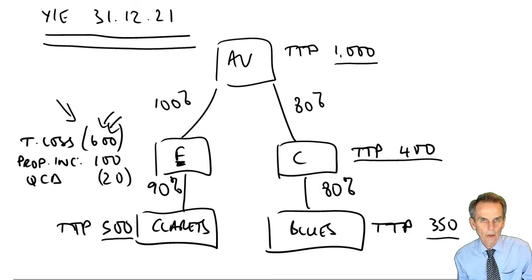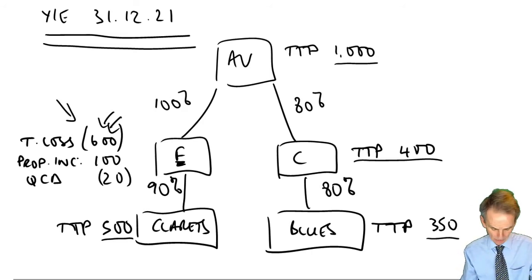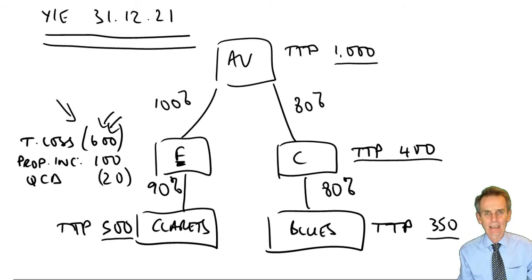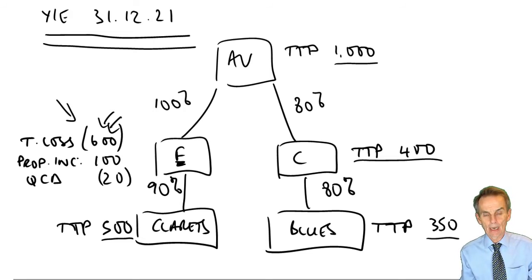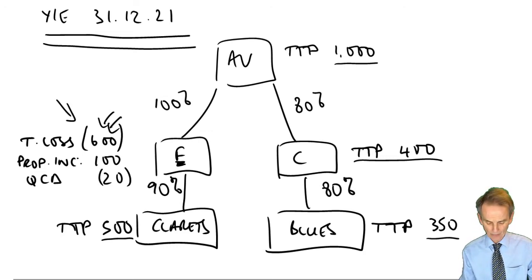The two issues I asked you to consider were: firstly, the number of related 51% group companies and what was the significance of there being related 51% group companies? We also had to look at the amount of loss sustained by Company F and identify the possible uses of that loss, what objectives we were trying to achieve to get the best use out of that loss, and what recommendations we would give. Firstly, then, the related 51% group companies.